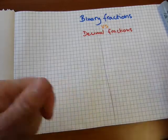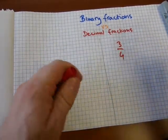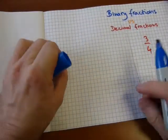Let's do a super easy fraction. How about 3 quarters? 3 quarters in decimal looks like this in binary.